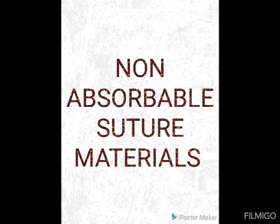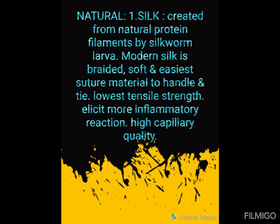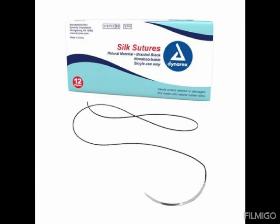Moving on to non-absorbable suture materials. The first is silk, created from natural protein filament spun by silkworm larvae as they build a cocoon. Modern silk is braided, soft, and perhaps the easiest suture material to handle and tie, but it has the lowest tensile strength of any material tested. It elicits more inflammatory reaction and has high capillarity. In cutaneous surgery it can be used around the eyelids and lips where it lies flat, causes minimal irritation, and has a low potential for infection.